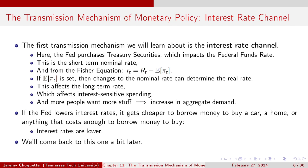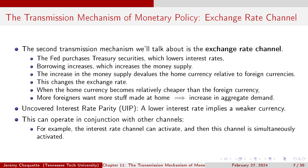If the Fed lowers interest rates, it gets cheaper to borrow money to buy stuff, so you borrow more. As you borrow more, the supply of money in the economy increases, more money is floating around, people want to spend it, and you get an increase in aggregate demand. The interest rate channel still operates even if the Fed shifts to a longer-term interest rate — it's just a different interest rate that's operating.